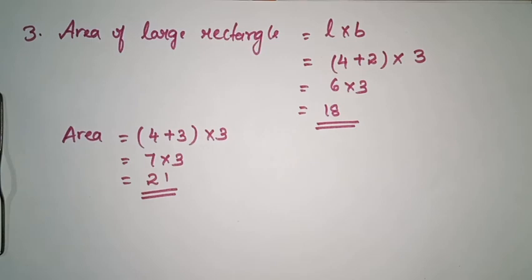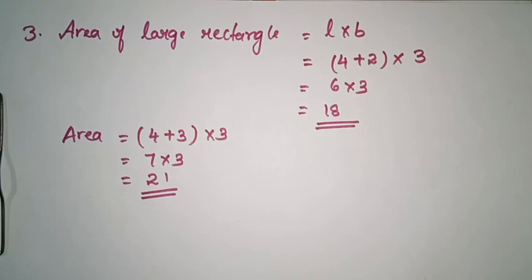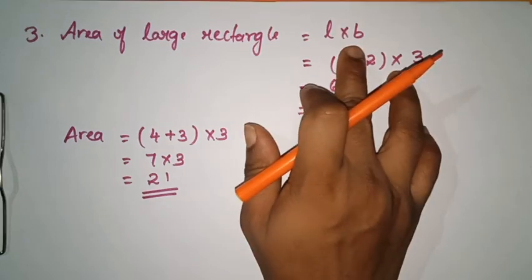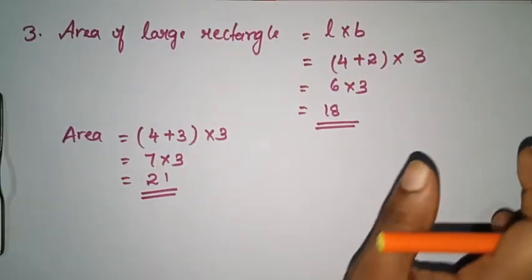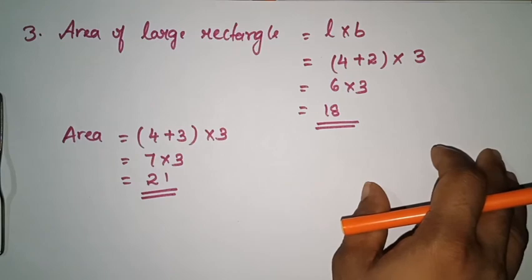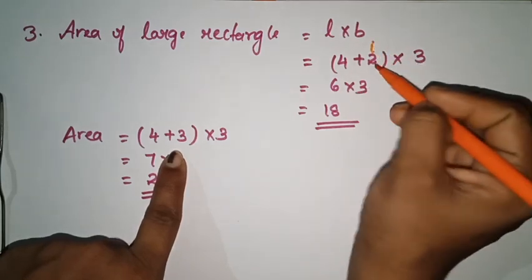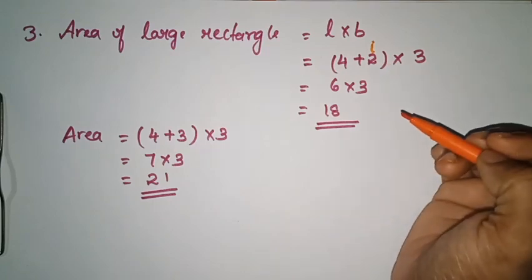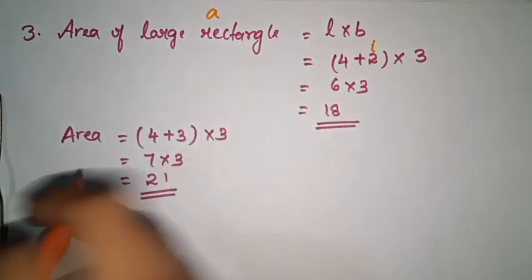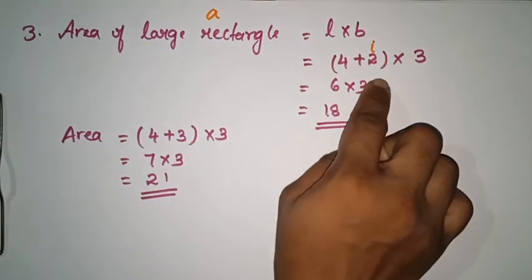Taking the length and breadth of the original rectangle as L centimeters and B centimeters, the increase in length as I centimeters, and the area of the larger rectangle as A square centimeters — in what ways can we write the relation between L, B, I, and A?